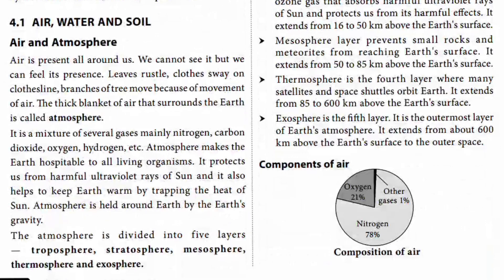The exosphere is the fifth and outermost layer of the earth's atmosphere. Now, the components of the air — you can see a small diagram here which shows the amounts of oxygen, nitrogen, etc. Nitrogen is 78%, the largest part of the air. Oxygen is 21%. The remaining portion consists of other gases such as hydrogen, carbon dioxide, etc.